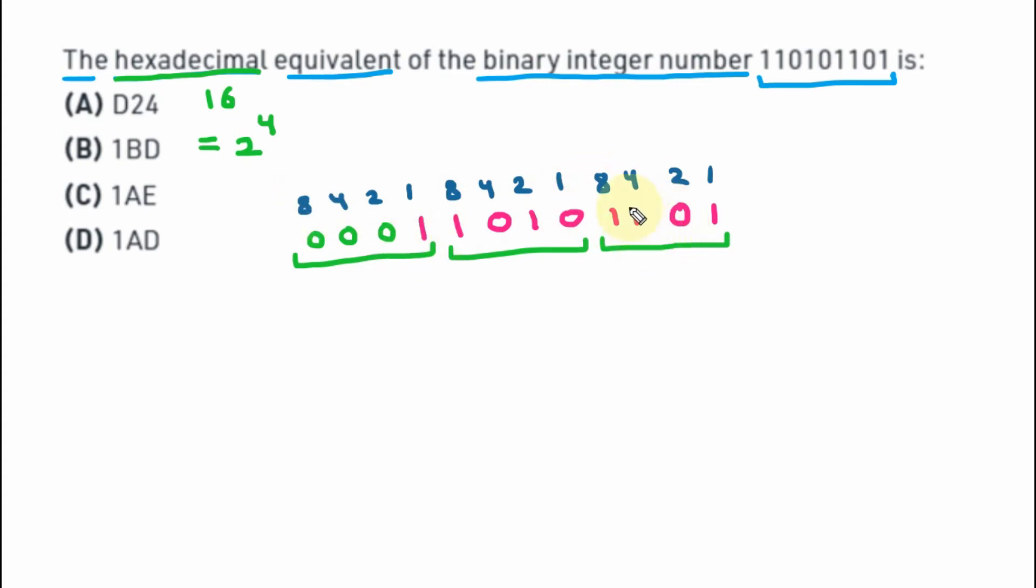For the first block, multiply 8 with 1. 8 ones are 8, then plus 4 with 1, 4 ones are 4, plus. 2 times 0 will be 0, so ignore it. 1 times 1 is 1. So 8 plus 4 is 12, plus 1 is 13.